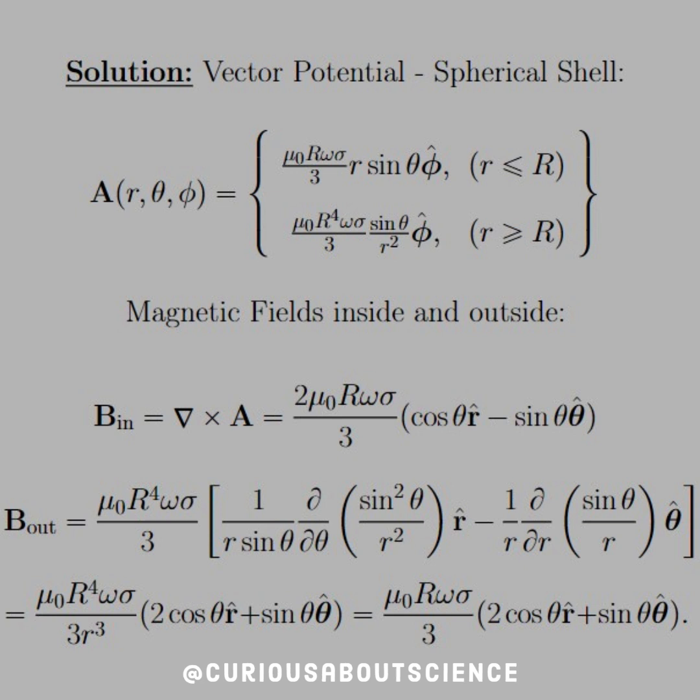When we do the same thing, taking a curl, but for the vector potential piecewise where we're outside the sphere, then we have to be a little more systematic in the curl application. It kind of boils down to something reasonable here.